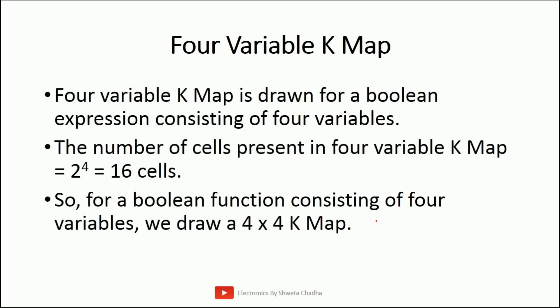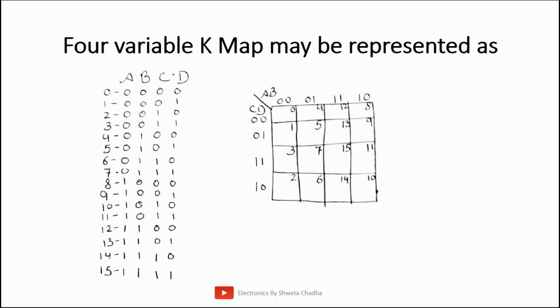The last type is the 4-variable K-map. This is used for representing 4 variables in a Boolean expression. We can have 16 cells and only one configuration is possible: a 4×4 matrix. The 4 variables are A, B, C, and D. The truth table has all 16 entries starting from 0 to 15. The truth table pattern follows: 8 zeros then 8 ones for A, 4 zeros 4 ones for B, 2 zeros 2 ones for C, and alternating 0 1 for D.